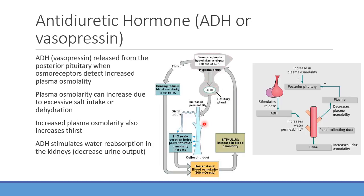ADH also causes some vasoconstriction and stimulates thirst centrally, encouraging drinking to increase blood volume. The main triggers for ADH release are low blood volume and high plasma osmolality — a sign of dehydration. When blood is too concentrated, osmoreceptors in the hypothalamus trigger ADH release, causing more water reabsorption by the kidneys.